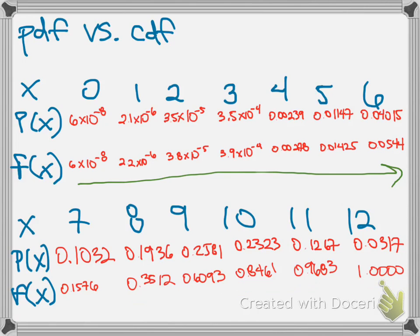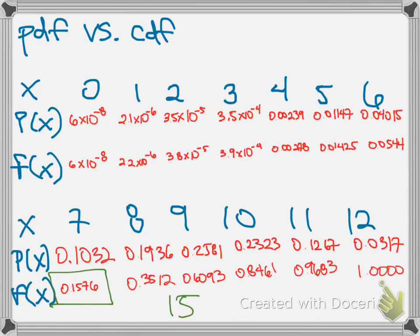Now we're ready to answer our question: what is the probability that she makes at most 7 shots? We simply find the CDF value corresponding to 7 shots, which is 0.1567. So there is a 15.67% chance she will make at most 7 shots. That also means there is an 84.24% chance she would make 8 or more shots, which I got by taking 100% and subtracting 15.76%.